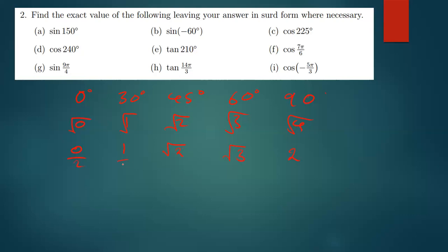Then I'm going to divide everything by two. The answers I get are the solutions for sine theta. So: 0 divided by 2 is 0, 1 divided by 2 is one half, root 2 divided by 2 stays as root 2 over 2, root 3 divided by 2 stays as root 3 over 2, and 2 divided by 2 is 1. So: sine 0° = 0, sine 30° = 1/2, sine 45° = √2/2, sine 60° = √3/2, sine 90° = 1.